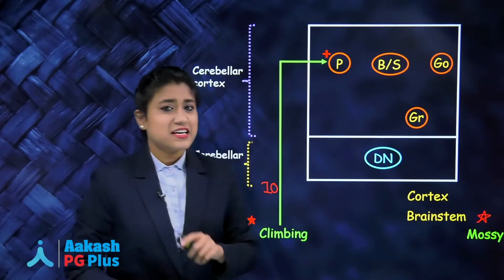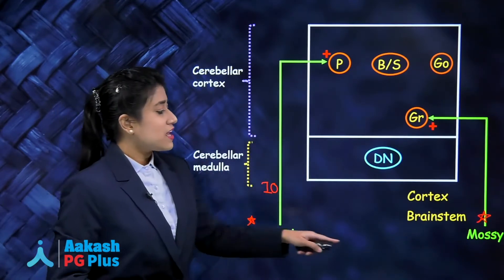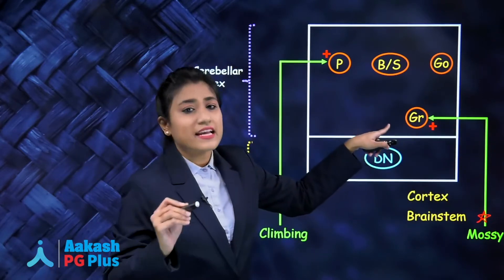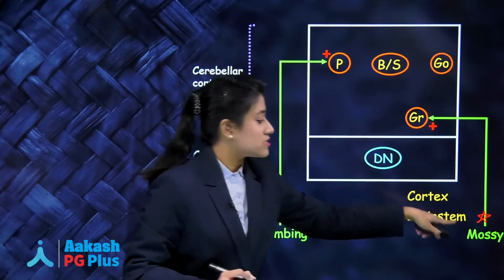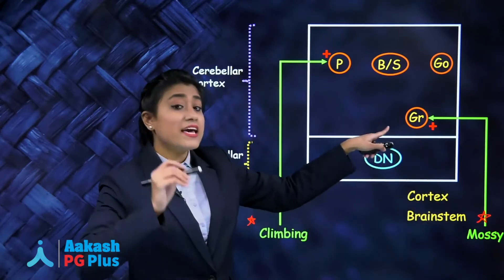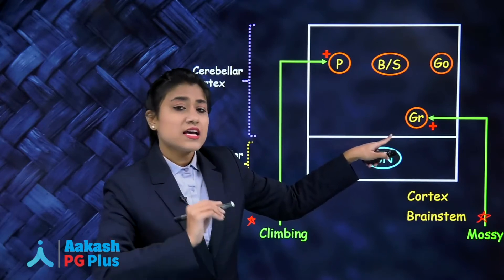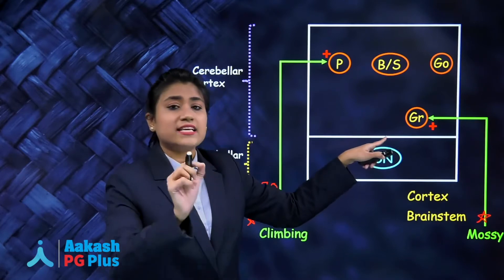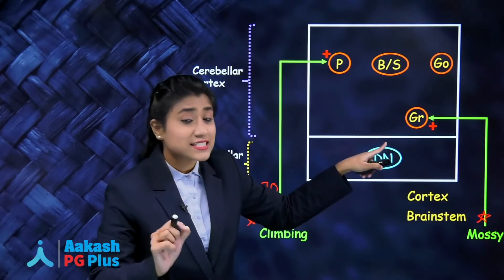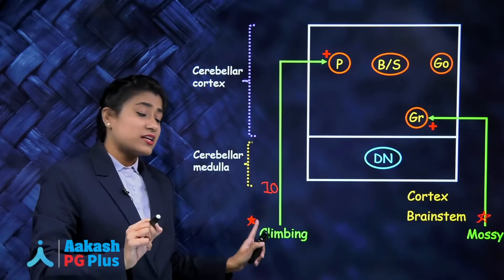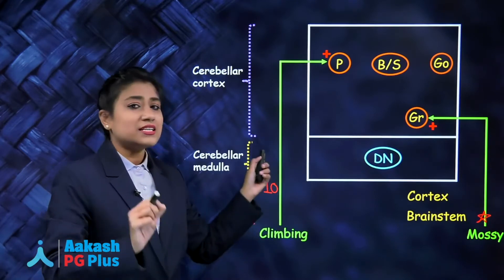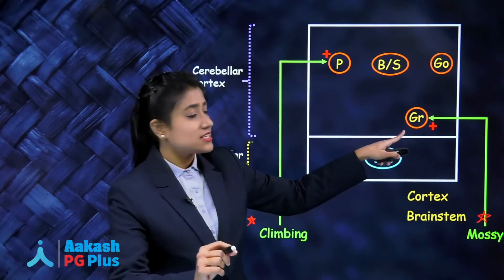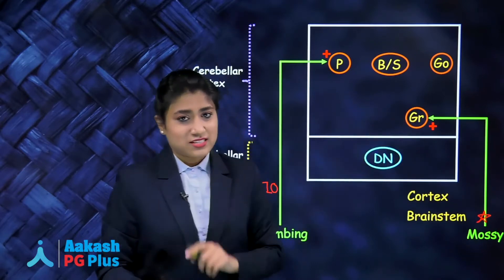Mossy fibers are afferent fibers that stimulate granule cells. Mossy fibers come from all parts of the brain stem and the spinal cord, except the inferior olivary nucleus — because information from the inferior olivary nucleus travels via climbing fibers. So mossy fibers end on and stimulate granular cells.